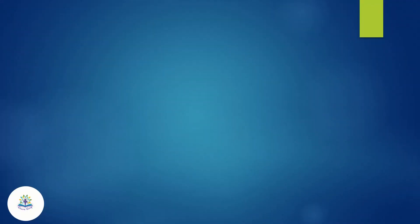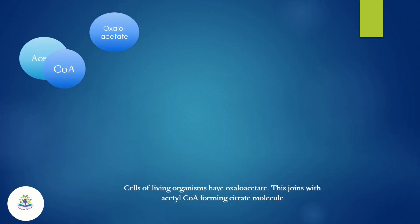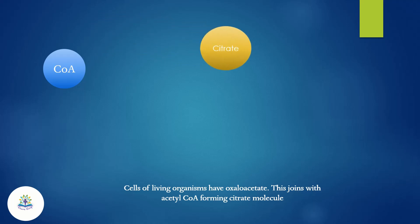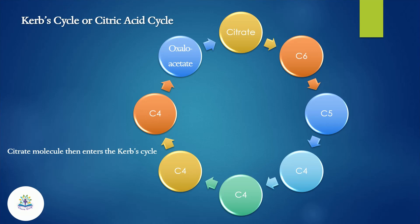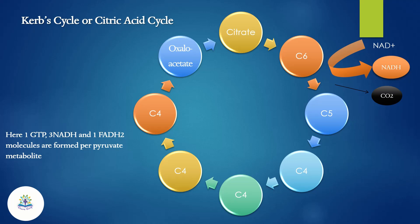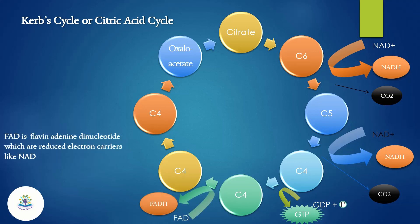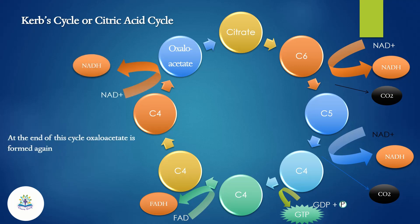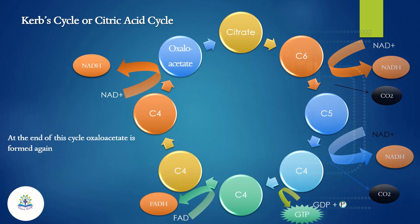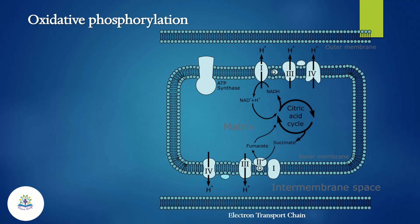Cells of living organisms have oxaloacetate, which joins with acetyl-CoA to form a citrate molecule. The citrate molecule then enters the Krebs cycle, where it undergoes oxidation and reacts with enzymes and coenzymes. Per pyruvate metabolite, one GTP, three NADH, and one FADH2 are formed. FAD is flavin adenine dinucleotide, a reduced electron carrier like NADH. At the end of the cycle, oxaloacetate is reformed.